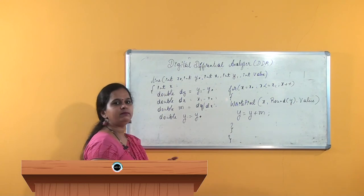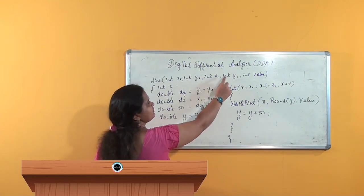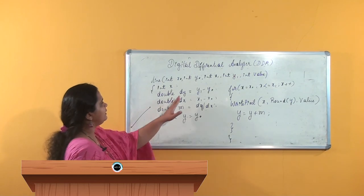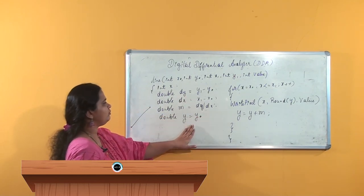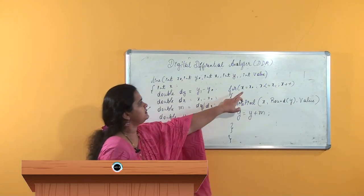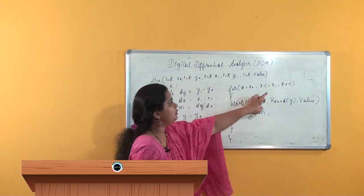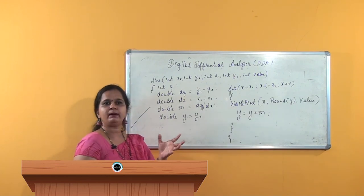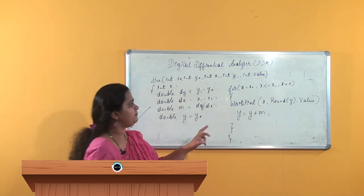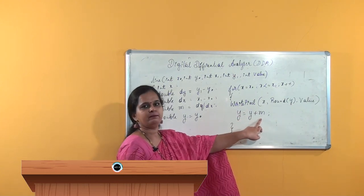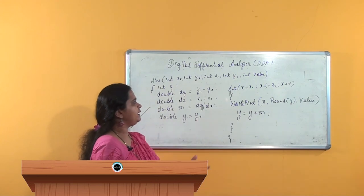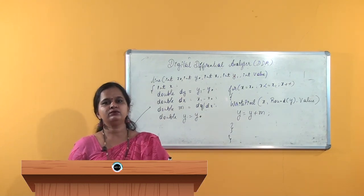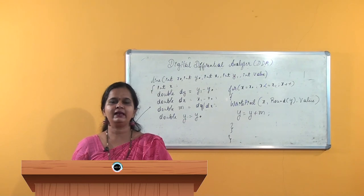Going through once again: the algorithm is written directly on the theoretical concept — x is incremented by 1 and y is incremented by plus m. The line starts at (x0, y0) and ends at (x1, y1). dy and dx are calculated, y starts from y0, x repeats up to x1, the pixel is written using round(y) to convert any fractional part, and y changes by plus m every iteration.